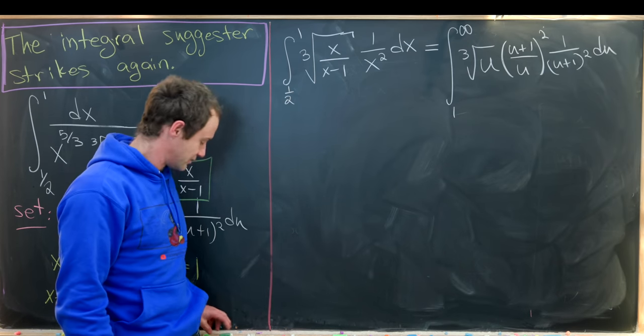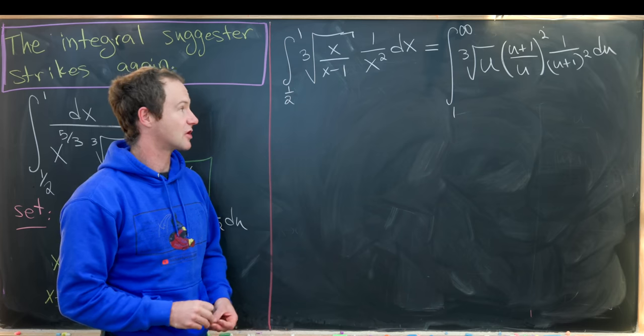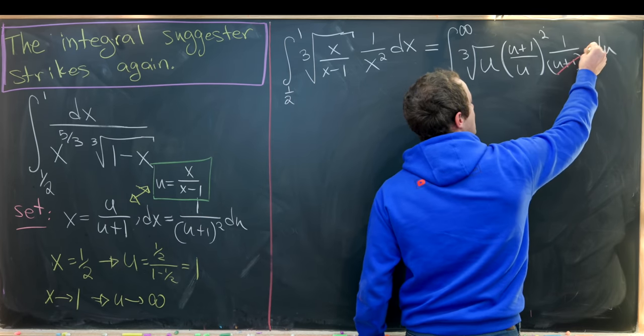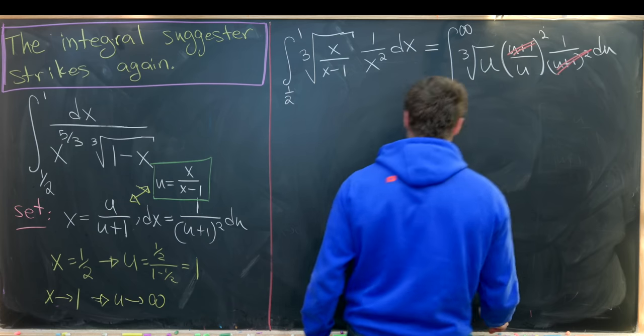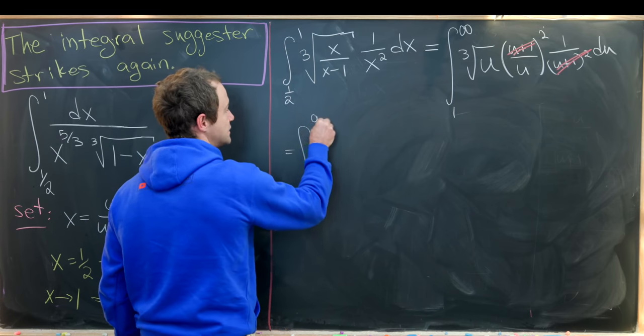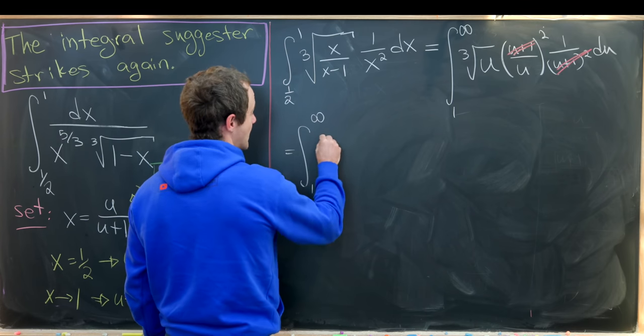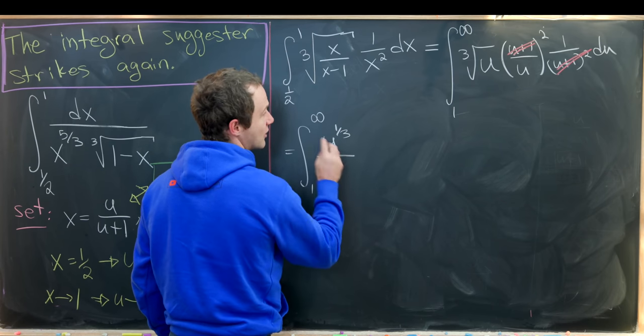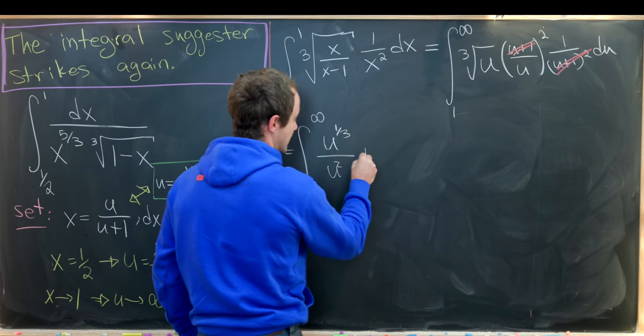And now I think you can probably see where the simplification occurs. We have a u plus 1 squared here that cancels with a u plus 1 squared here. And then we're left with the integral from 1 up to infinity of the cube root of u, which I can write as u to the third over u squared du.